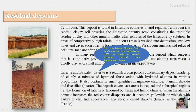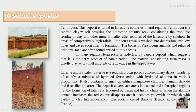The next type is laterites and bauxites. The term 'laterite', which literally means 'brick rock', was first used by Buchanan in 1807 to describe a naturally occurring material from Angadiburam, Kerala — you can see the Angadiburam laterite deposit in the left-side image. Laterite is a reddish-brown porous concretionary deposit made chiefly of a mixture of hydrated ferric oxide with hydrated alumina in various proportions. It also contains small quantities of manganese chloride, titanium dioxide, and sometimes free silica (quartz). The deposit covers vast areas in tropical and subtropical regions, as formation of laterite is favored by warm and humid climate.